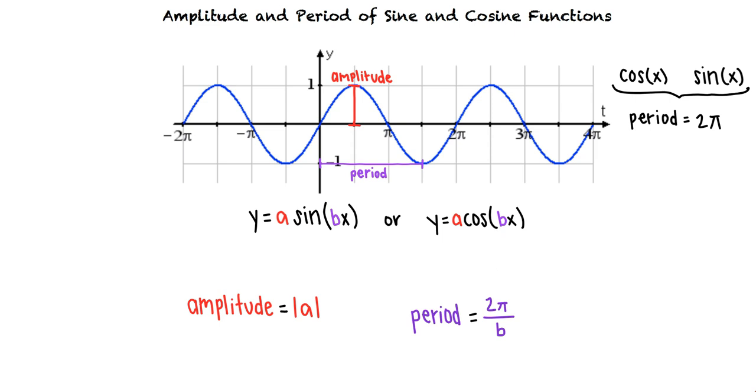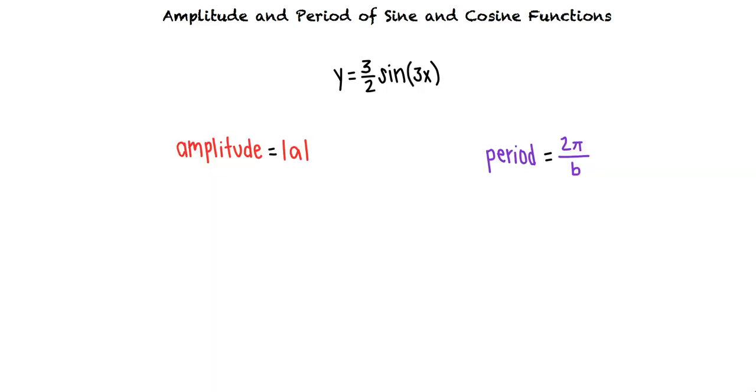Okay, with this information, can we take a look at an example problem? Of course! Say we're given the equation y equals 3 halves sine of 3x. We can identify a as 3 halves and we can identify b as 3.